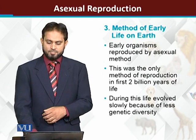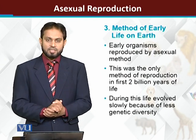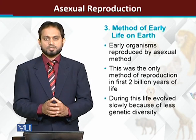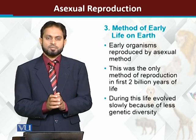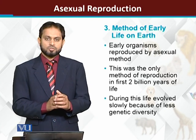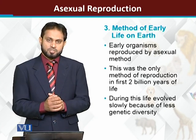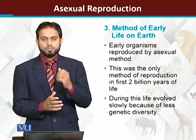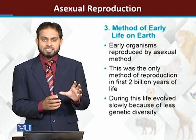Asexual reproduction was the only way of reproduction during early life. When life started on Earth, about four billion years ago, the only method of reproduction available to organisms was asexual reproduction.